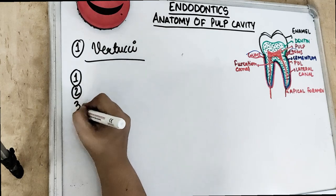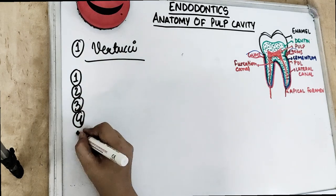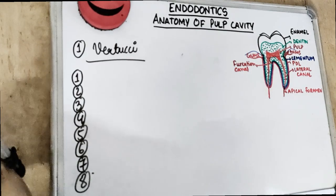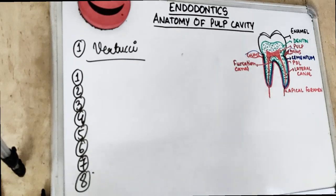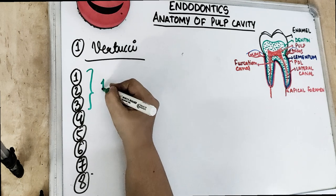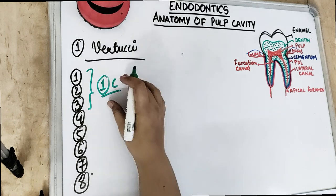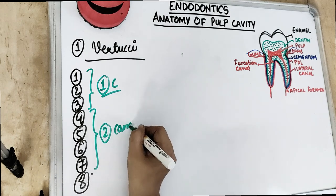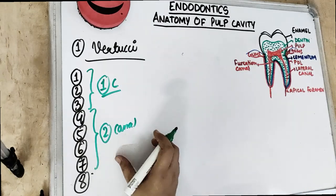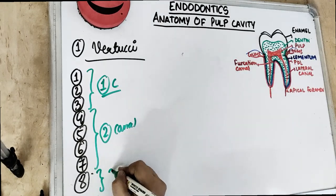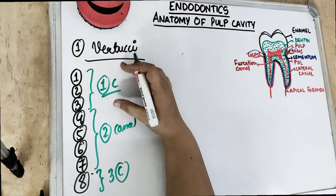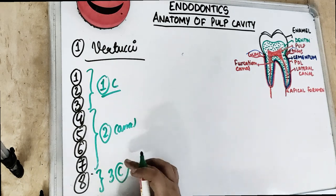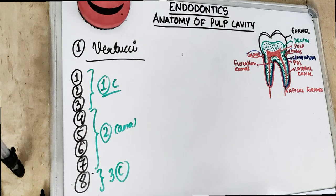The Vertucci classification has 8 types. Types 1 to 3 have 1 canal, types 4 to 7 have 2 canals, and type 8 has 3 canals. So from type 1 to type 3 it is 1 canal, type 4 to type 7 are 2 canals, and the 8th type is 3 canals.